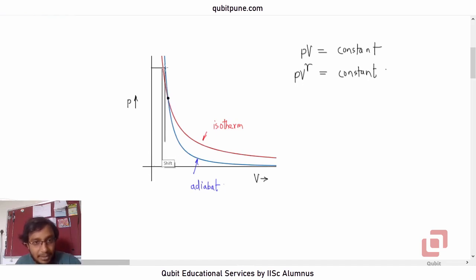And no matter where you draw the horizontal line, the volume values will always be different. Why are they different? Where is the difference coming from? The difference is coming from the fact that for adiabate, the power of V is greater than one. And for isothermal process, the power of V is equal to one.